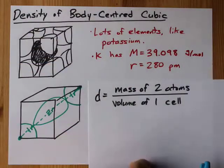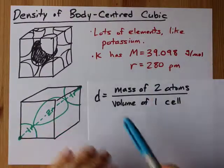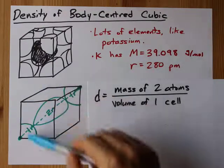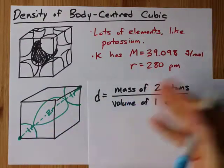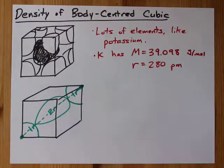Density is mass over volume, so all we're going to need is the mass of two atoms of that metal and the volume of one unit cell. The volume is going to be the most annoying thing to do there. The mass of two atoms isn't too bad.